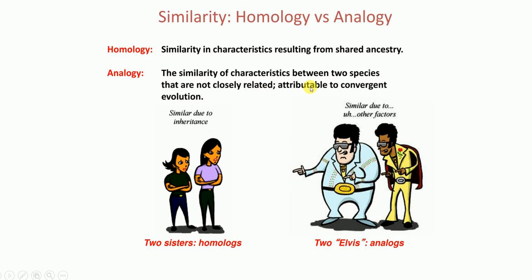For example, the similarity of characteristics between two species that are not closely related is attributable to convergent evolution. Two sisters from the same parents would be homologous, but two organisms that are not from a common ancestor but function the same way are analogs. I hope this video was helpful in understanding homologs, paralogs, orthologs, and analogs.